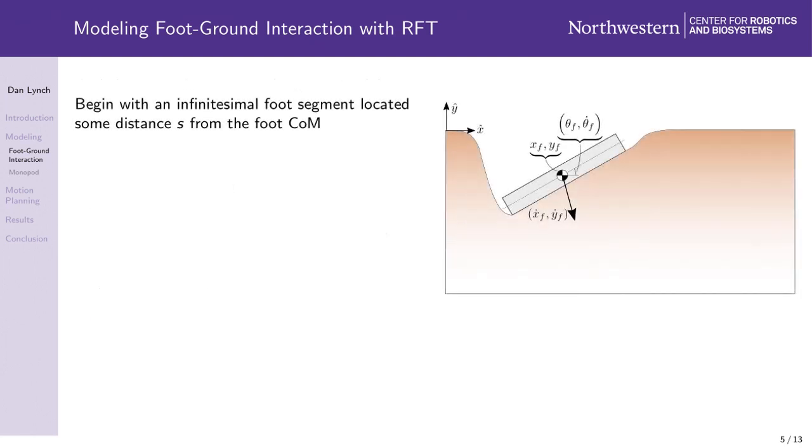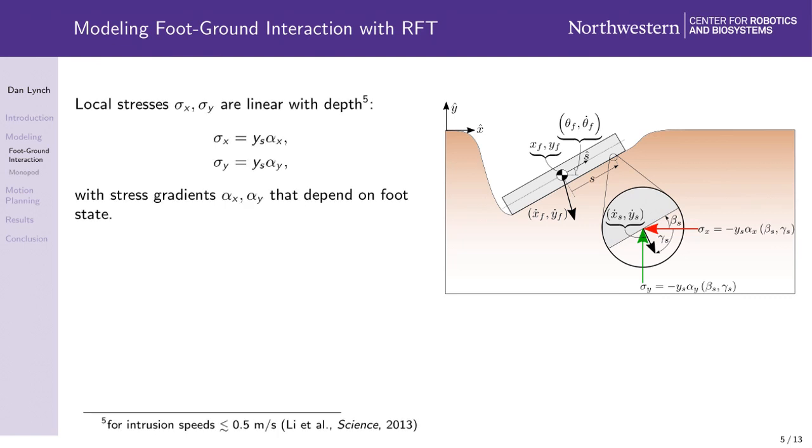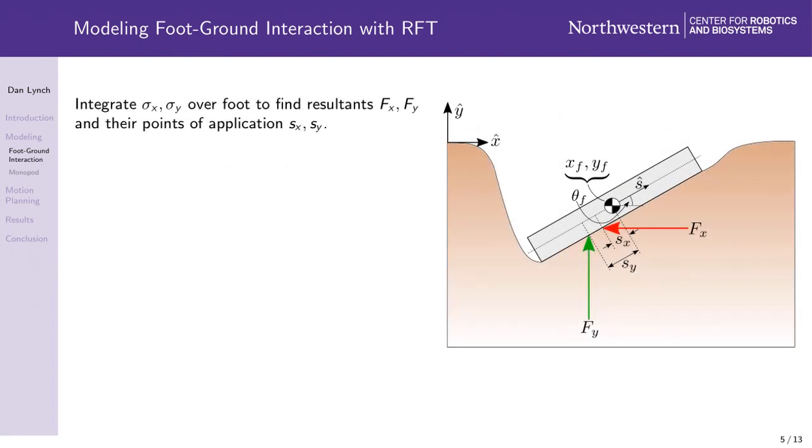We begin by modeling a flat foot and considering an infinitesimal segment of the foot located some distance from the center of mass. The local resistive stresses on this segment are approximately linear with depth, with coefficients that depend on the segment's orientation and intrusion angle. We then integrate these resistive stresses over the foot to find resultant forces and their points of application.